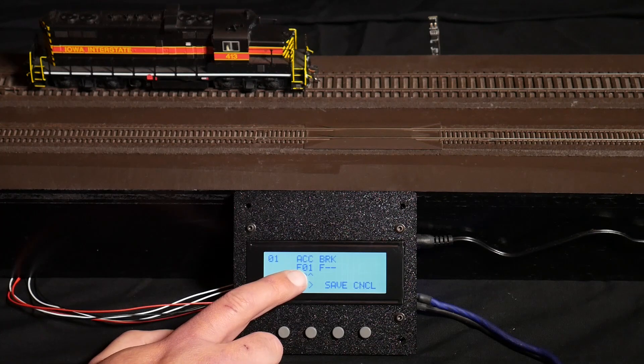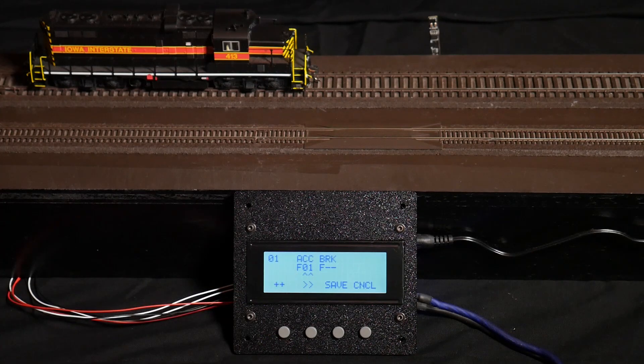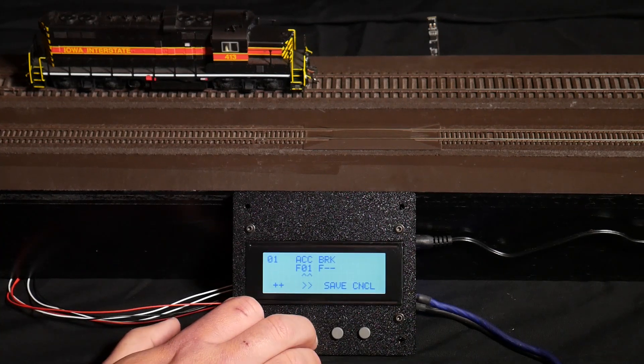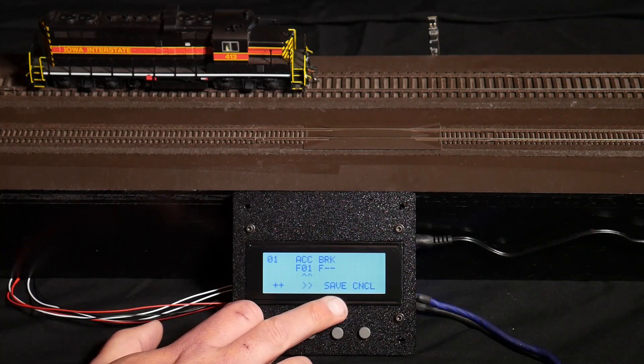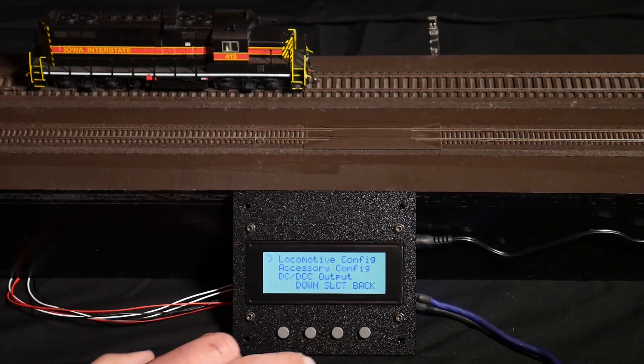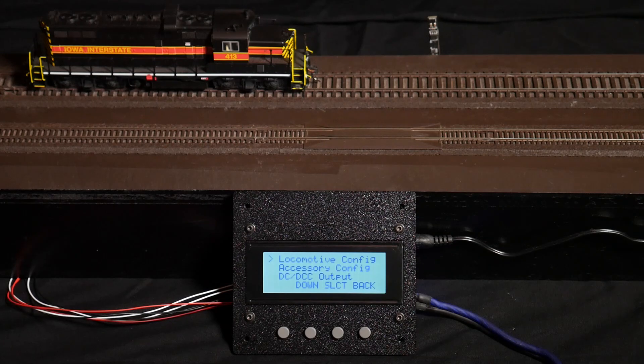In addition, we have function one set for the acceleration function, which actually sounds the bell for a few seconds while the locomotive is accelerating. Now we can either save any changes we made or cancel out. I don't want to disturb the configuration, so we'll just cancel.